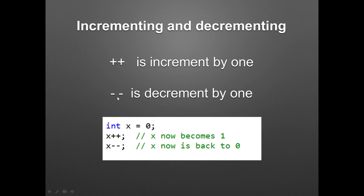If you use the double hyphen — minus minus — that is to decrement by 1. So where x was 0, now it would be negative 1. If you were to do both in line, it would be 1 and then back to 0. So if this program were to run inside of main, it would end up being 0 after everything is done.